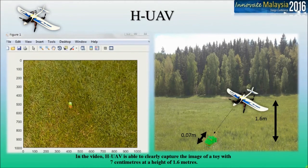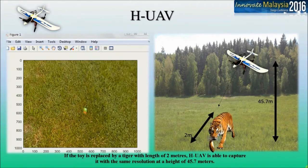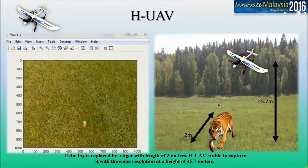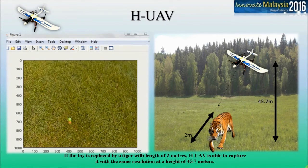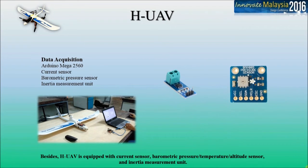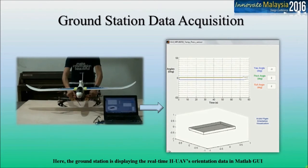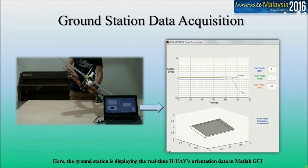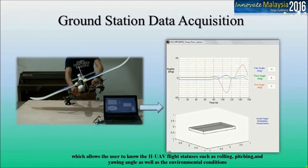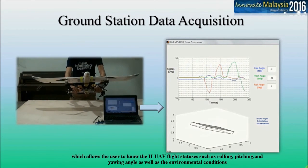HUAV is able to clearly capture the image of a toy with seven centimeters at a height of 1.6 meters. If the toy is replaced by a tiger with a length of 2 meters, HUAV is able to capture it with the same resolution at a height of 45.7 meters. Besides, HUAV is equipped with a current sensor, barometric pressure, temperature, altitude sensor, and inertia measurement unit, and an RF transceiver sends all sensor data through wireless communication to the ground station. The ground station displays real-time HUAV orientation data in a MATLAB GUI, allowing users to monitor flight statuses such as rolling, pitching, and yawing angles as well as environmental conditions.